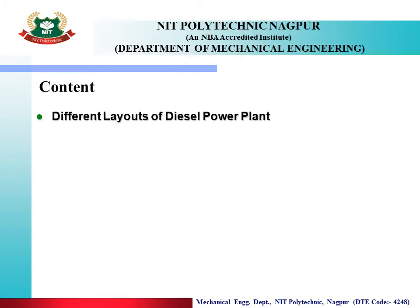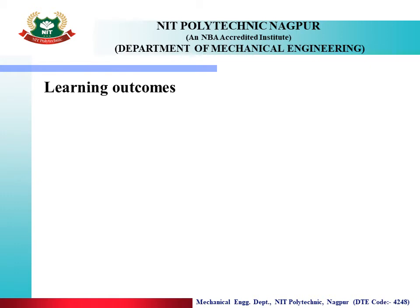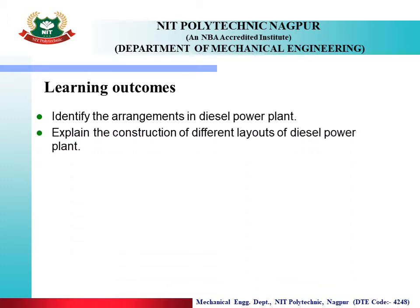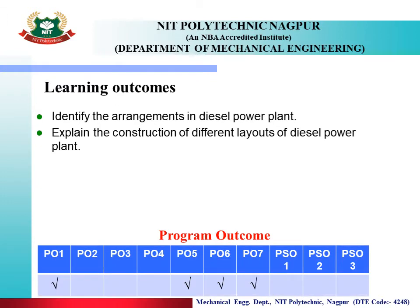Content: Different Layouts of Diesel Power Plant. Learning Outcomes: After completion of this lecture, you will be able to identify the arrangement in a diesel power plant, and explain the construction of different layouts of a diesel power plant. Program outcomes are mapped by the table given below, from PO1 to PO7 and PSO1 to PSO3.